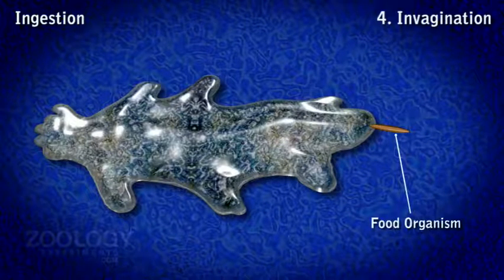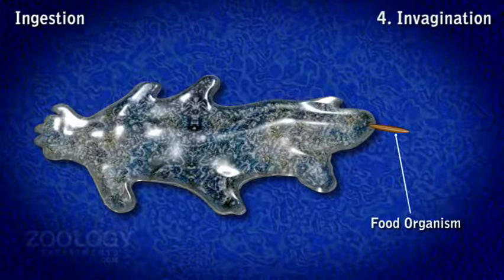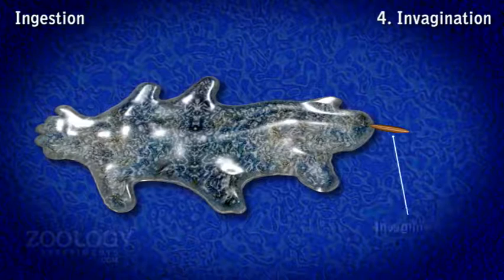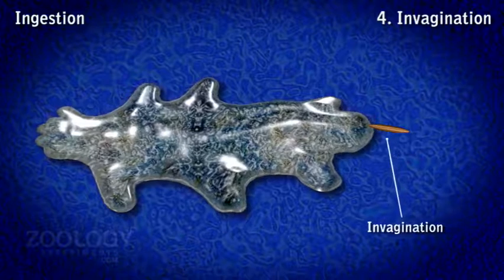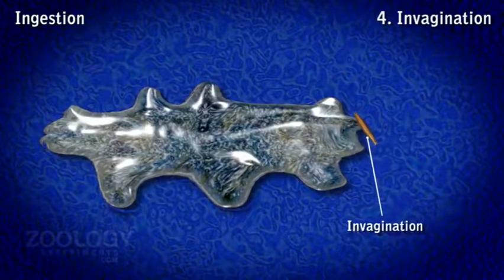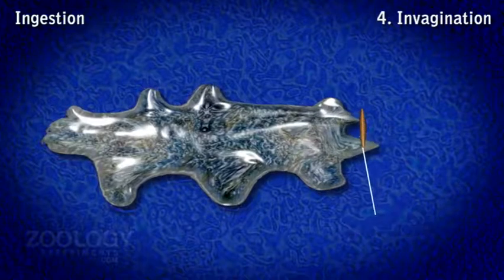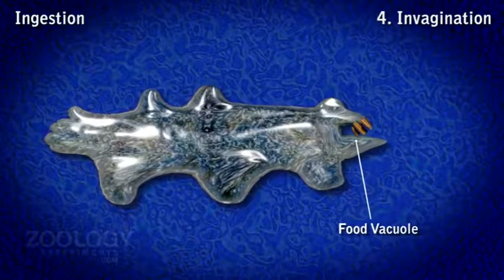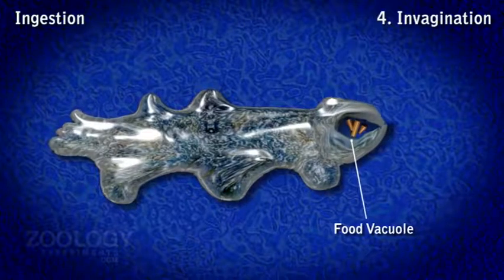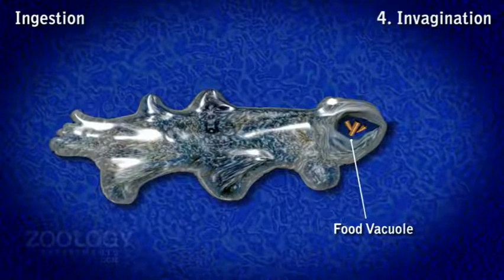4. Invagination: In this method, the food is streaked by the toxic secretion of the ectoplasm. The food organism is sucked in on contact with the ectoplasm by the formation of an ectoplasmic tube. This tube, upon engulfment, takes the form of a food vacuole.